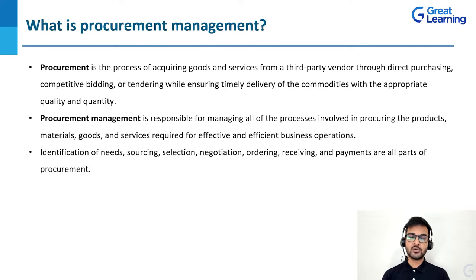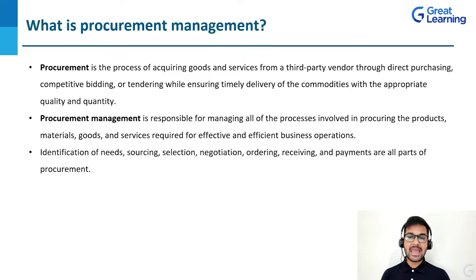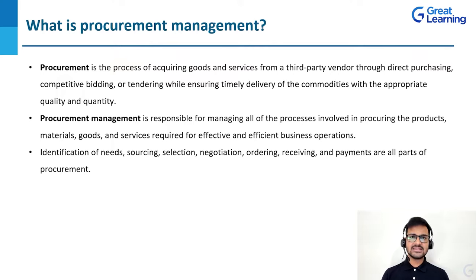Procurement management is responsible for managing all of the processes involved in procuring the products, materials, goods, and services required for effective and efficient business operations. It is not just purchasing the stuff. Identification of needs, sourcing, selection, negotiation, ordering, receiving, and payments are all parts of procurement. What exactly is the product or service that the company requires — how do you figure that out? How do you manage the sourcing, selection, and competitive analysis between bids? All these things are part of procurement management.